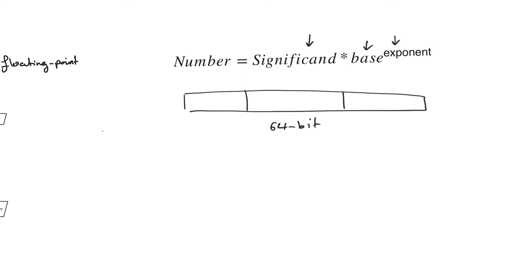Without much loss of generality, let's assume we have an exponent of 12 bits and we are only representing positive numbers. So we have numbers from an exponent of zero, which means we multiply by one, to an exponent of 2 to the power of 12 — that's a very large range. If you also imagine exponents being negative, they have the ability to represent really small numbers and really large numbers. Floating point numbers are usually associated with general purpose processors and really large registers.